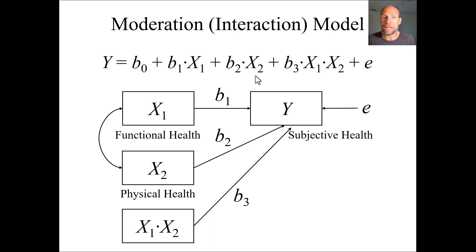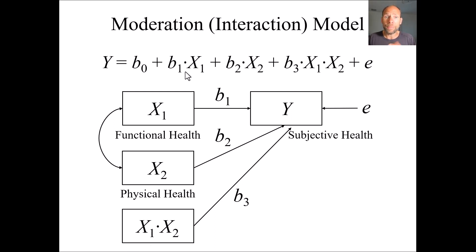The whole thing is a little more complicated because in order to properly interpret the coefficients b1 and b2, we should center the variables x1 and x2 before calculating the product term. If you want to learn more about this, check out the description for a course on mediation and moderation analysis that I am offering — you can find the link in the description. But that in essence is what a moderation or interaction model looks like.